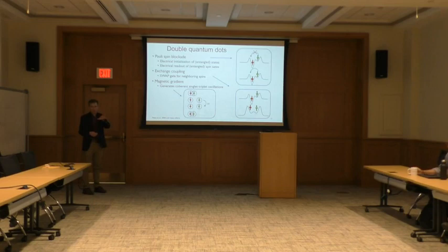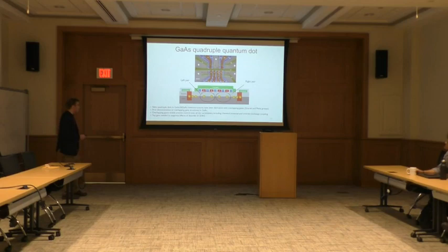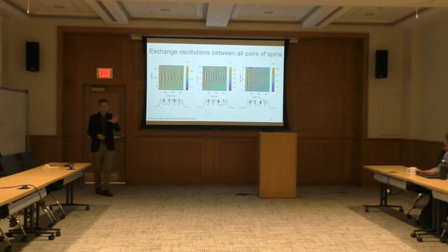If you forget everything else from this talk, remember this: the essential features of electrons in quantum dots for teleportation are that Pauli spin blockade enables electrical initialization and readout of entangled spin states; exchange coupling leads to a swap between neighboring spins, which is important for distributing the EPR pair; and the magnetic gradient generates coherent singlet-triplet oscillations. I'll tell you about teleportation in a four-dot device. Here are the four dots — the four qubits: one, two, three, four. I'll refer to the left pair and the right pair of qubits. As a first step, let me convince you that we can control the exchange coupling between all nearest-neighbor pairs of spins.